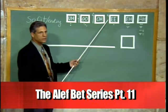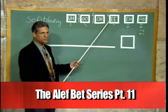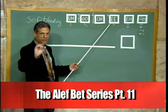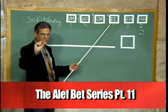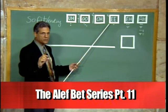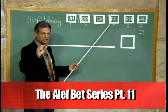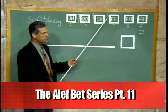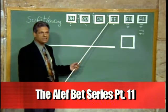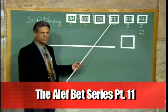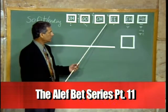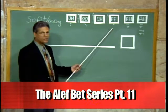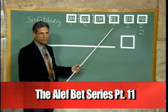we have the letter Yud. The letter Yud is the 10th letter of the alephbet and it's the smallest letter. Sometimes it's used as a grammatical helper. In this case, it produces the E sound if we put it next to a letter. So, underneath the letter, if you have a dot, that's an E sound.